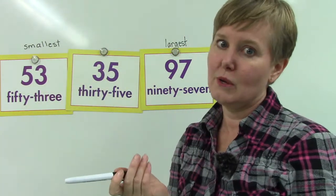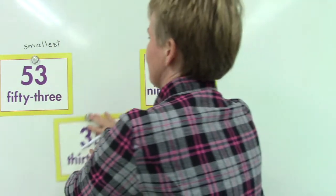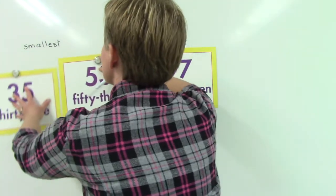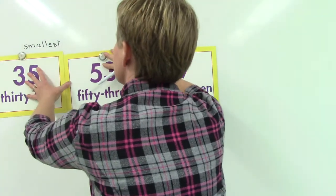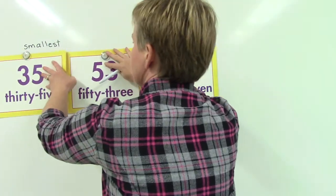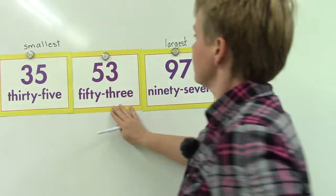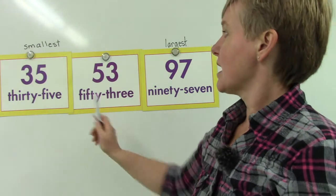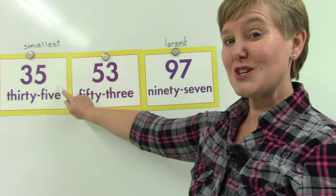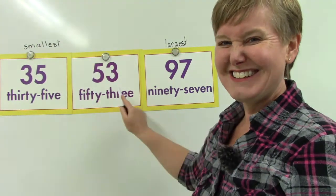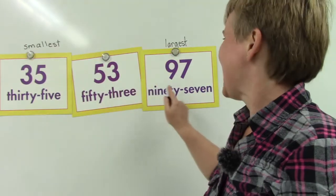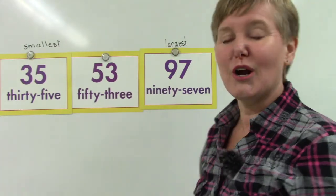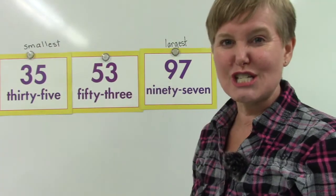Well, that's easy. We know that 3 is smaller than 5, so 35 is smaller than 53. 35 is our smallest, 53 is in the middle, and 97 is our largest number.